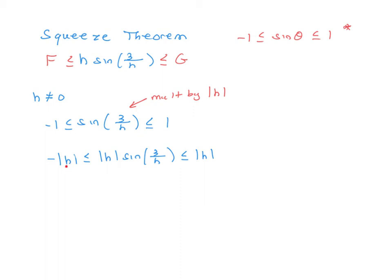The thing to note is, as h goes to 0, this will go to 0, and this will go to 0, which means this limit goes to 0. The second thing to note is, because this side is negative and this side is positive, we can actually just replace this absolute value of h with simply h itself. Negative the absolute value of h is less than or equal to h times sine of 3 over h is less than or equal to the absolute value of h.